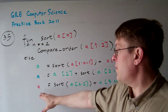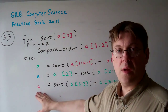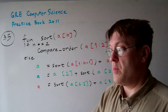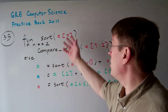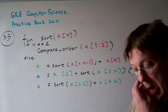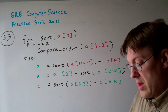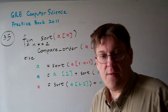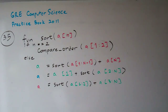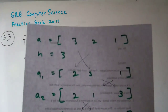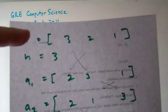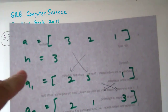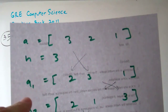We know we're going to end up with a sorted array as the output, sorting it in place. Just to give an idea of what we're talking about: if array a equals [3, 2, 1], then n is obviously three.